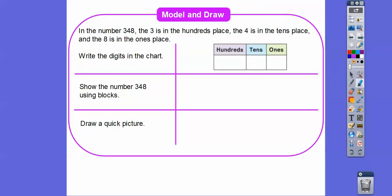So in the number 348, this three right here goes in the hundreds spot — so this is the hundreds spot. The middle number, the second number, is in the tens spot. So the four goes in the tens spot and the eight goes in the ones spot.